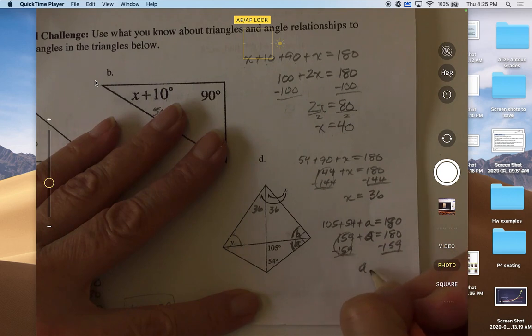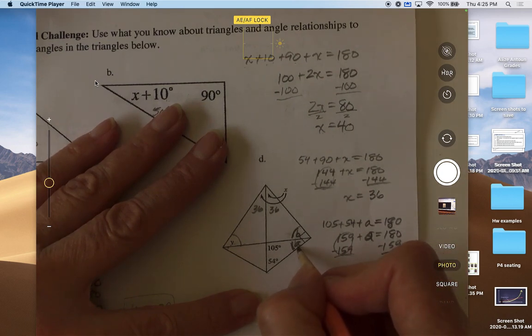We subtract 159 from both sides. This zeroes out. A is equal to, let's see, we have to borrow: 110 to get a 1, and that's 7. So we know that a, this one right here, is 21 degrees.